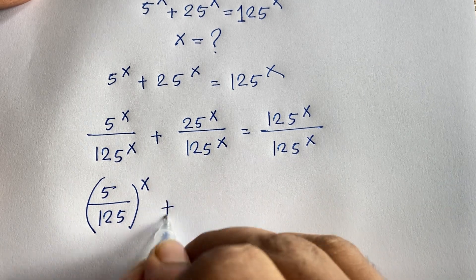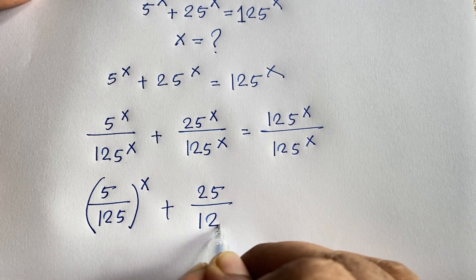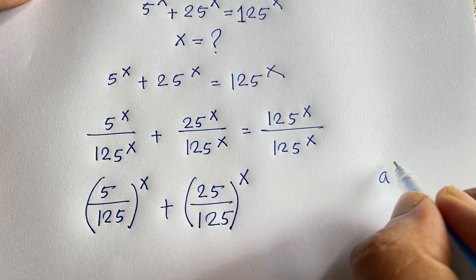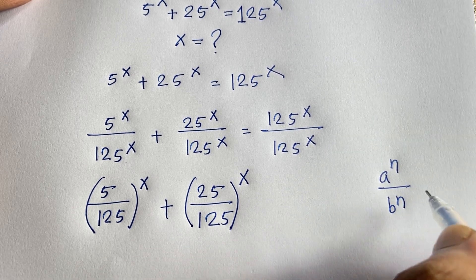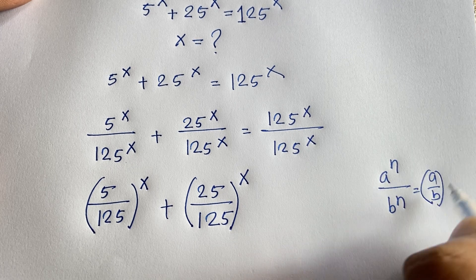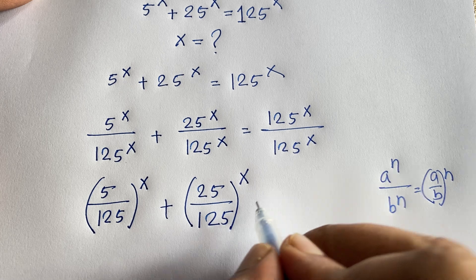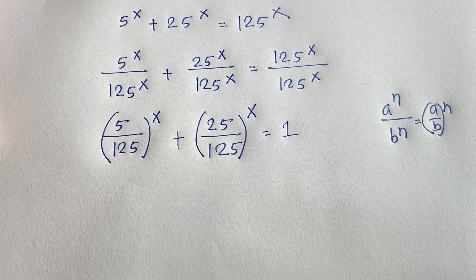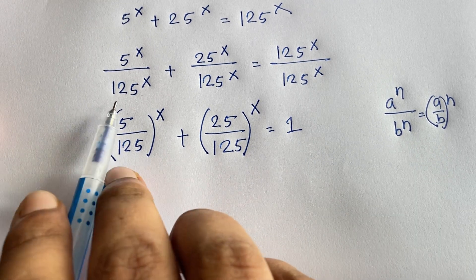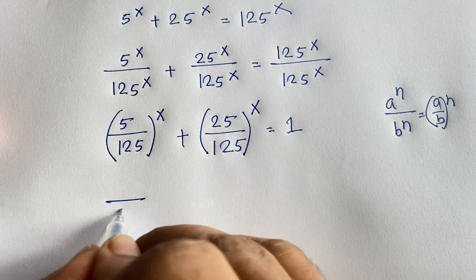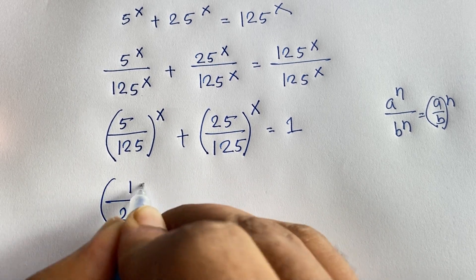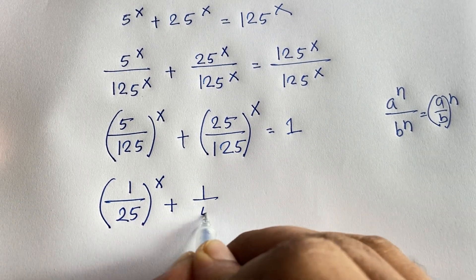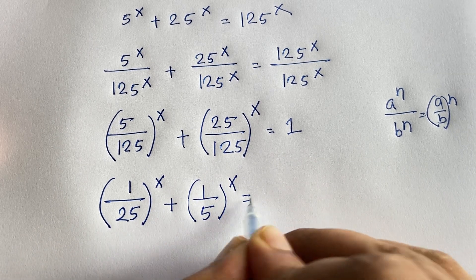And similarly, it will be (25/125) to the power x, equals 1. Following the rule: a to the power n over b to the power n equals (a/b) to the power n. So 125 divided by 5 is 25, giving us (1/25) to the power x, and 125 divided by 25 is 5, giving us (1/5) to the power x, equals 1.